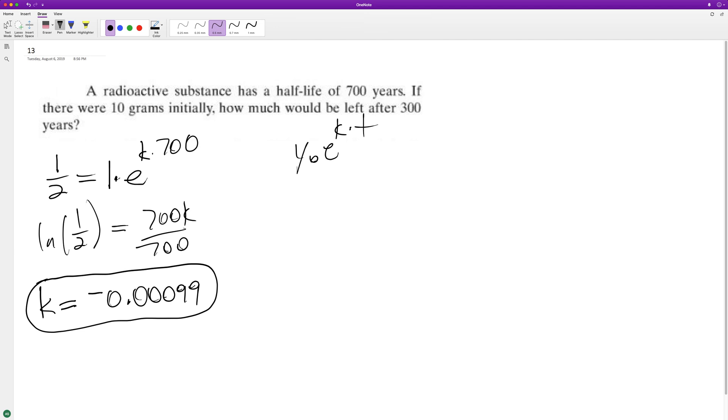Our Y sub naught is the 10 grams, K is our negative 0.000099, and our time is 700 years because we already configured this for the half-life which is 700 years.